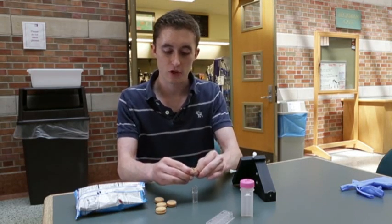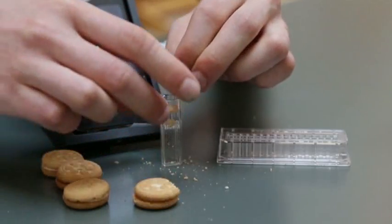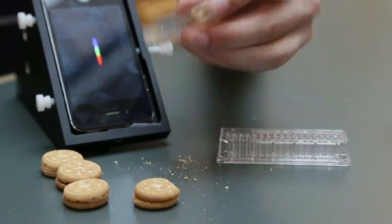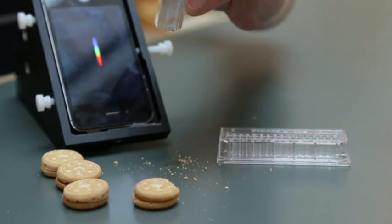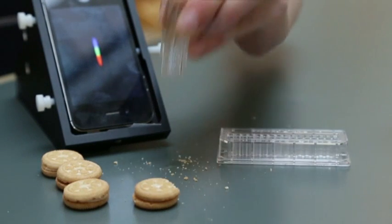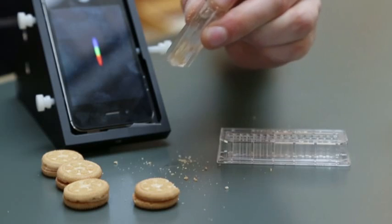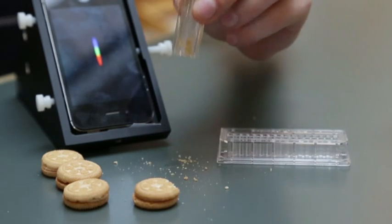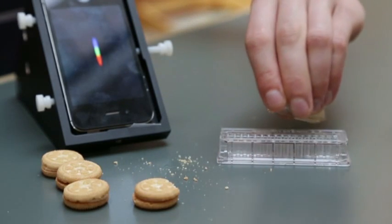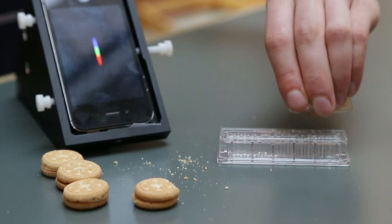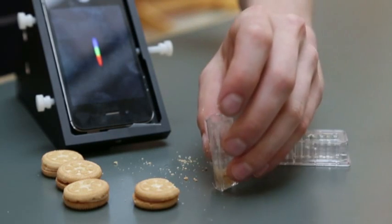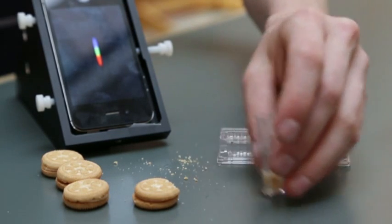You could just take some of the cookie and break it up just like that, and then you can invert it a couple times to mix it and let the extraction liquid take care of it. Then you can filter out the liquid and put it into our sample holder right here.